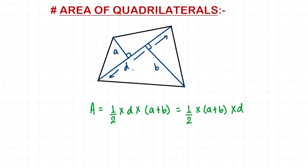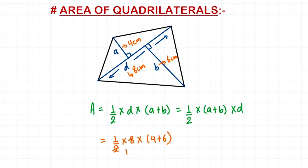For example, if the diagonal is 8 centimeters, A is 4 centimeters, and B is 6 centimeters, then to find the area we put in those values: 1/2 times 8 times (4 + 6). We can cancel the 2 and the 8 — 2 times 4 is 8 — giving us 4 times (4 + 6), which is 4 times 10, equal to 40 centimeters squared.